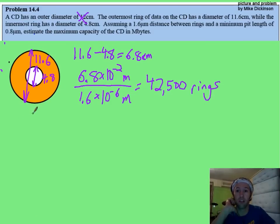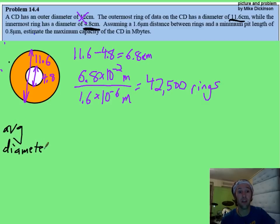Of these 42,500 rings, how long is each one? Well, you look up here, and the smallest one has this diameter, and the biggest one has this one. Then the average diameter, you just add them together and divide by 2.